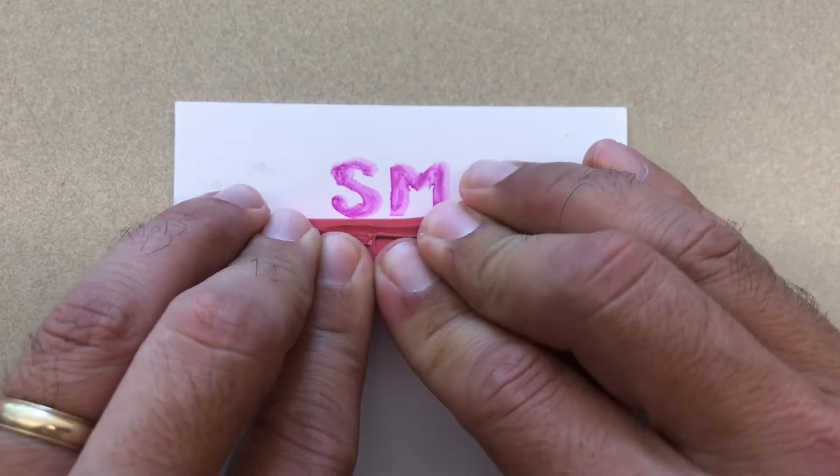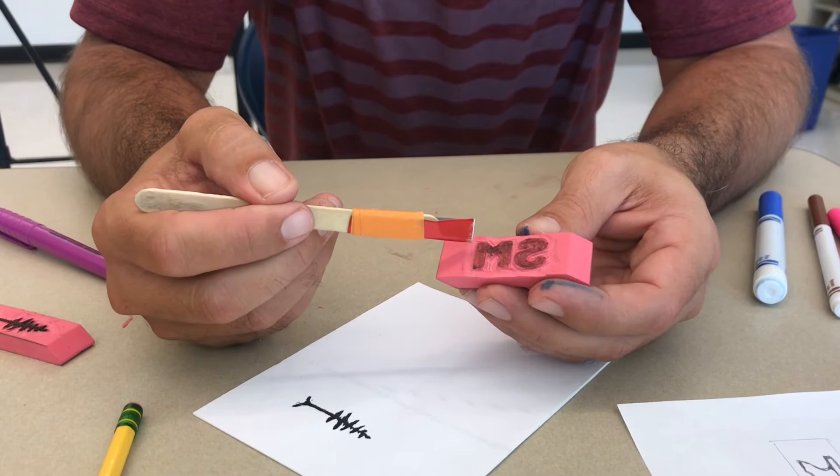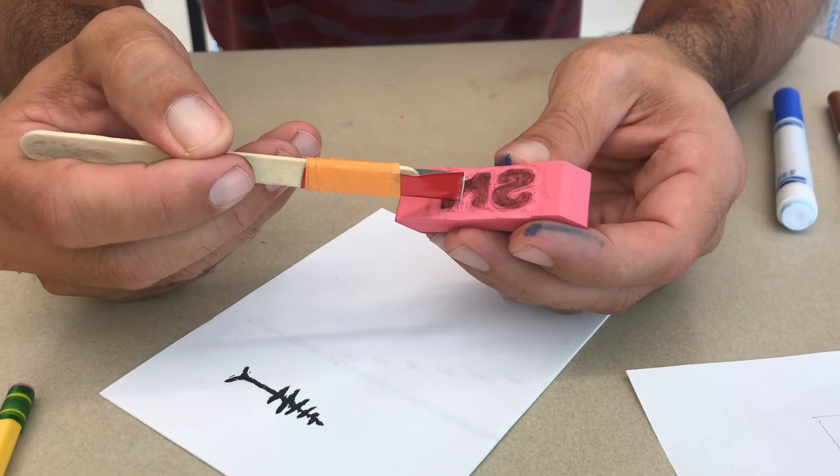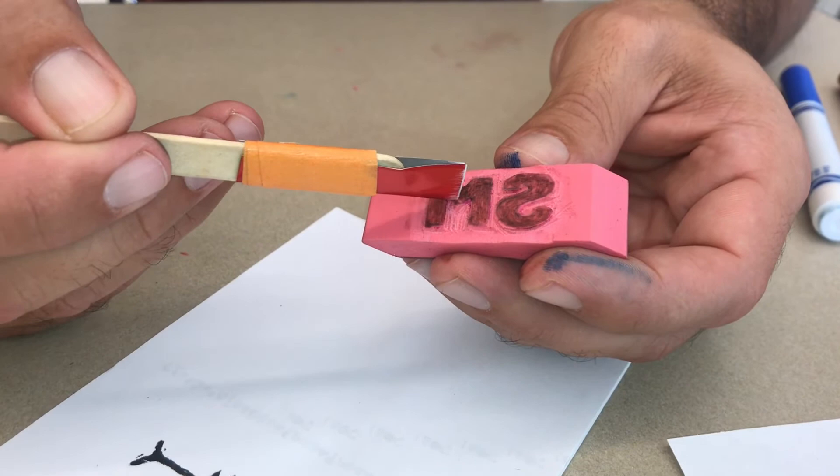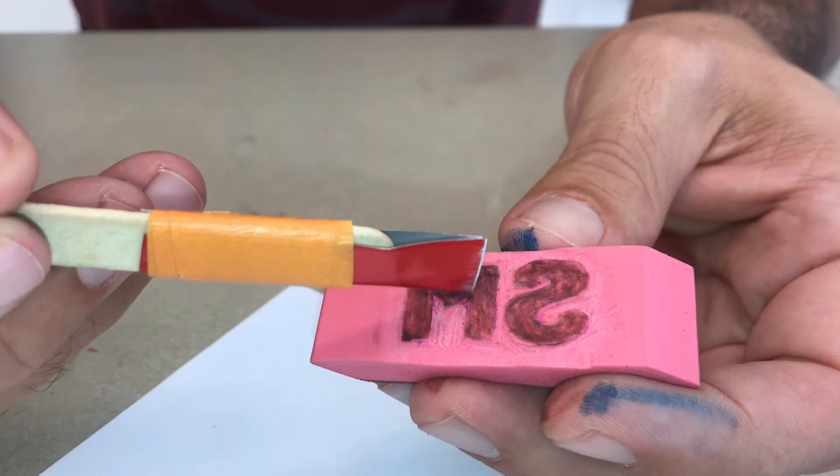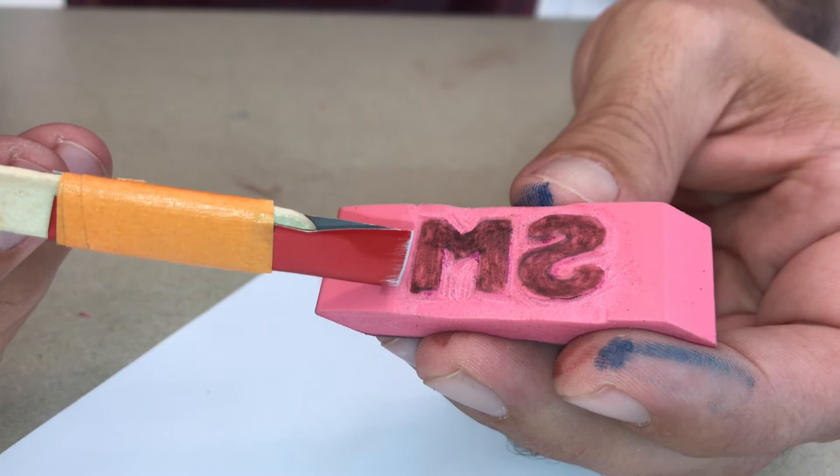Remember when you were carving your eraser, you were not carving out what you want to stamp, you're carving out everything around it. And the reason that we're carving out around it is it makes it easier to put the ink exactly where you want it on it. So the biggest mistake I've seen students make is they carve out the letters that they want to print. Just make sure that you outline what you want and you cut around outside of the stuff that you want to stamp.